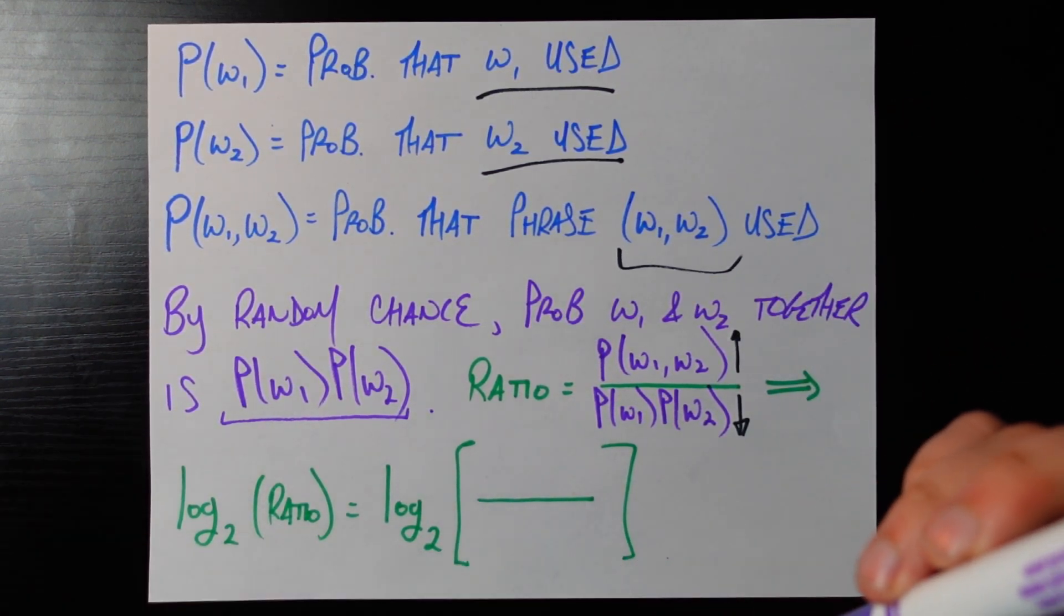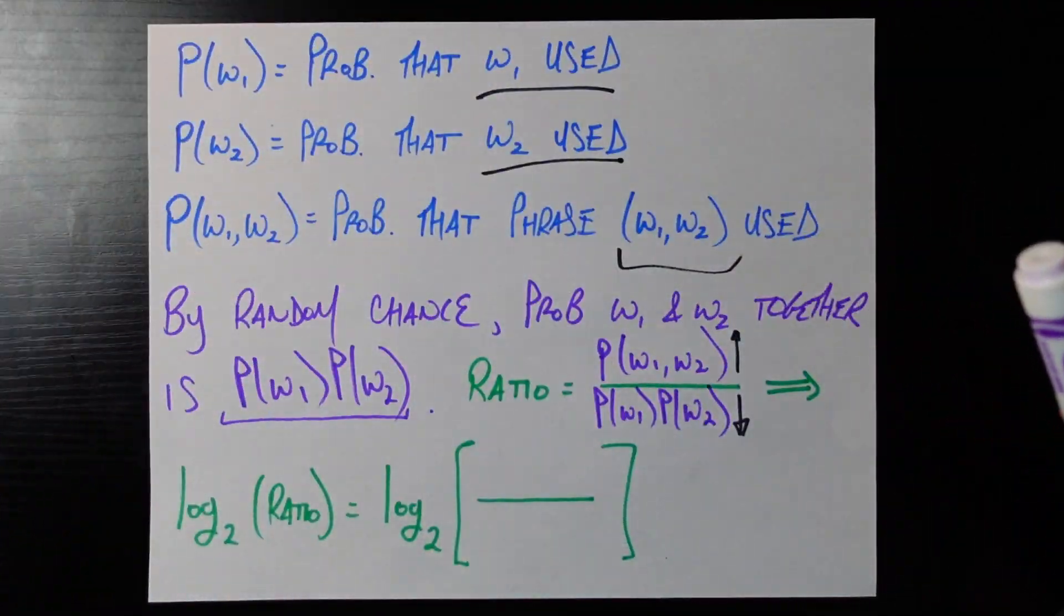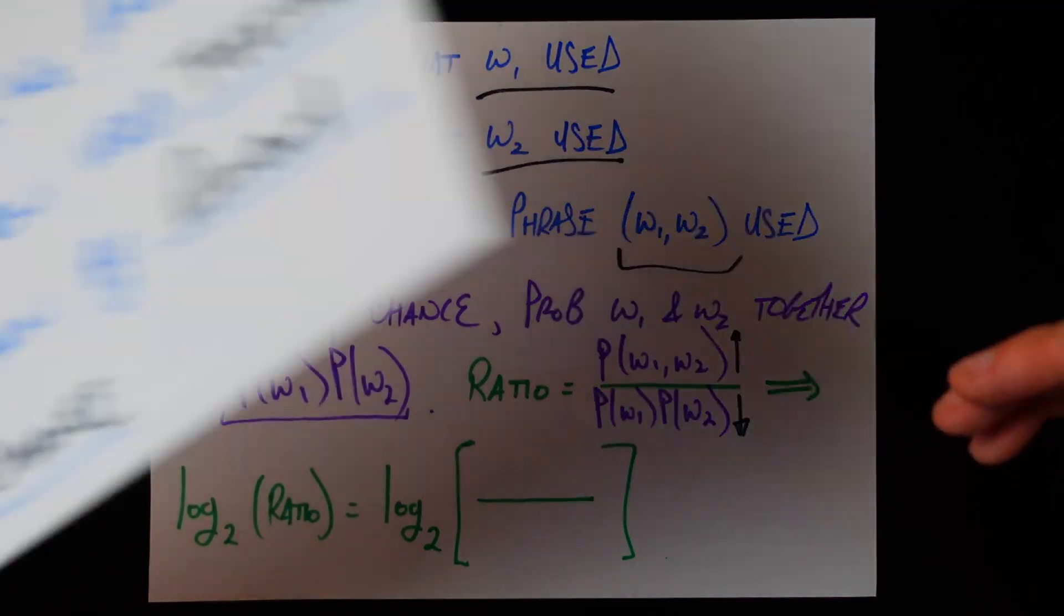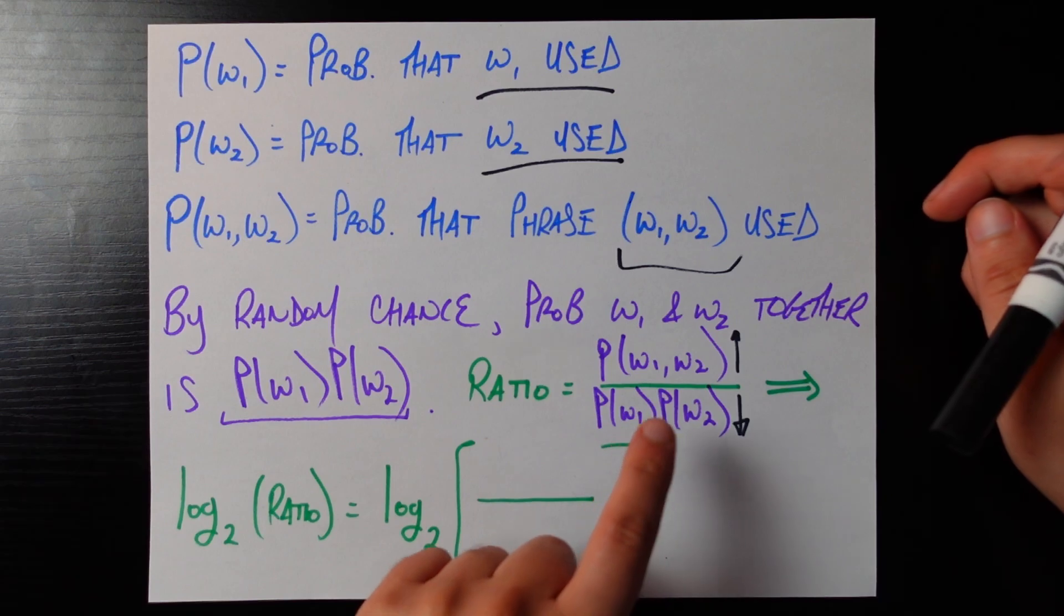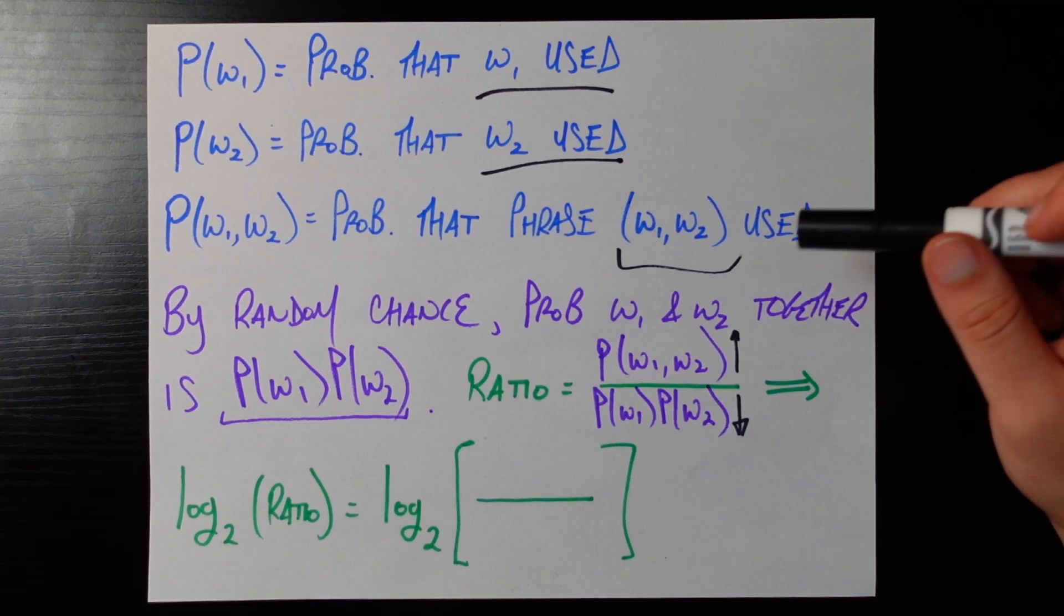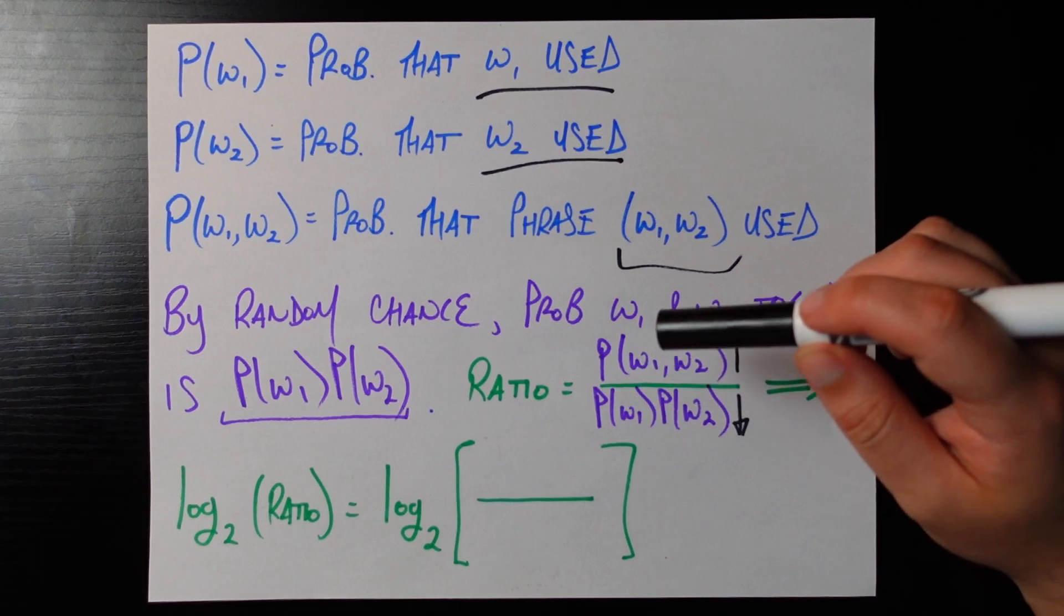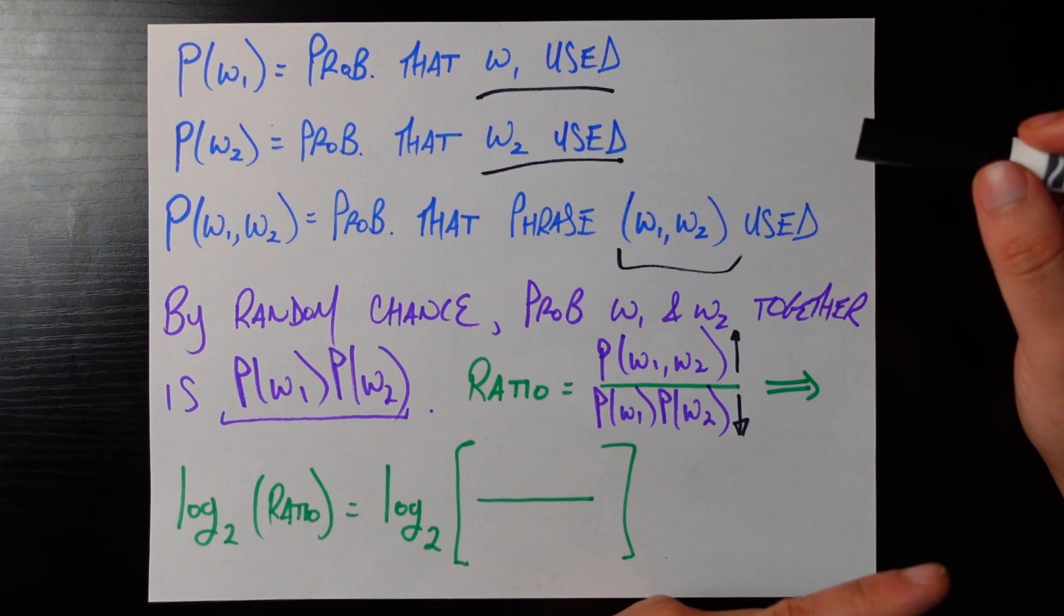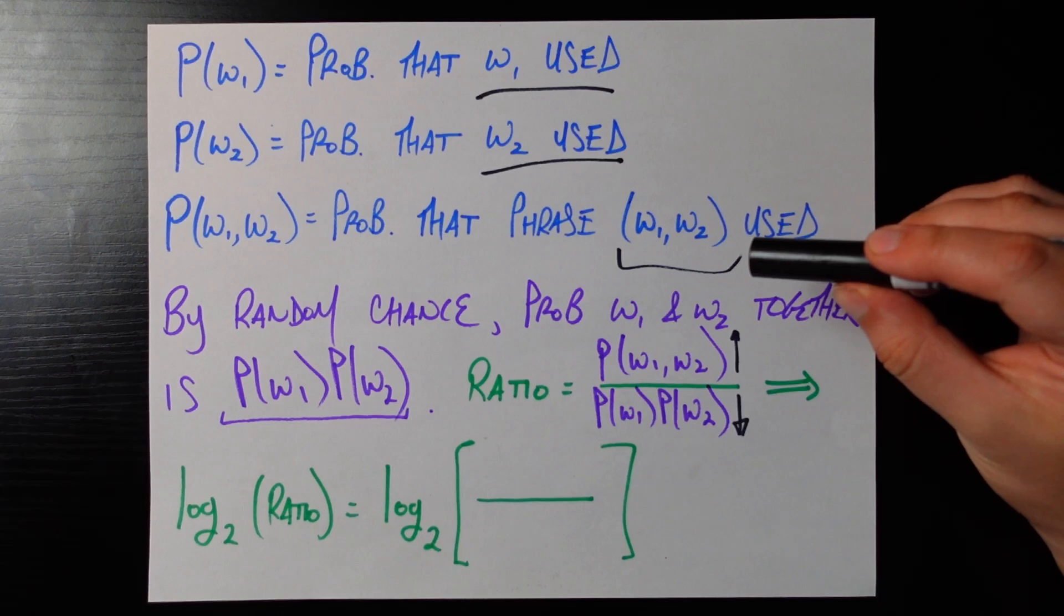Going back to our toy example here if we consider the phrase pet friendly that's one case where we would expect a pretty high ratio here. If on the other hand we had two terms that really had nothing to do with each other like want top then we would expect that they don't appear together any more often than we would expect by random chance alone in which case the numerator and the denominator are pretty much the same number and the whole ratio works out to one. So the closer this ratio is to one the more likely this is not a phrase and the closer this number is to infinity the more likely this is a phrase.